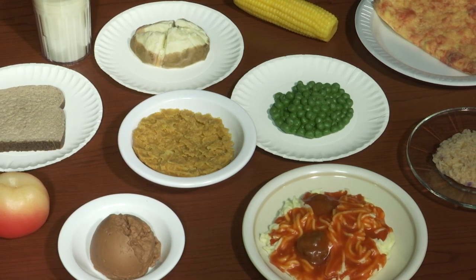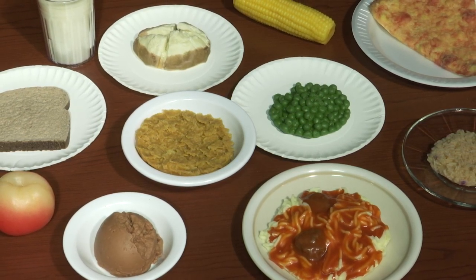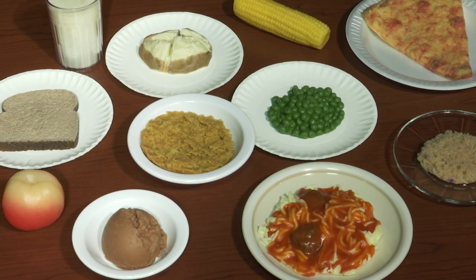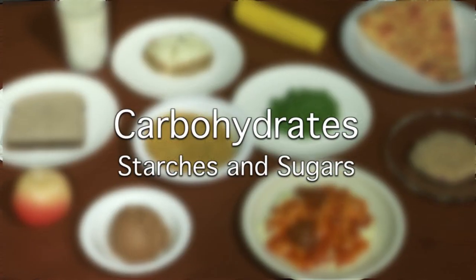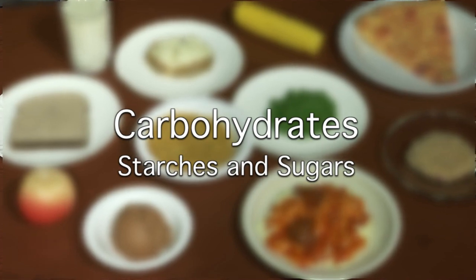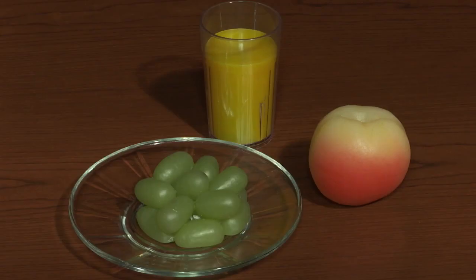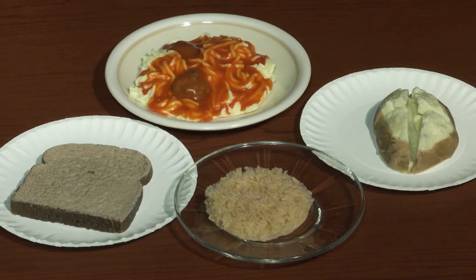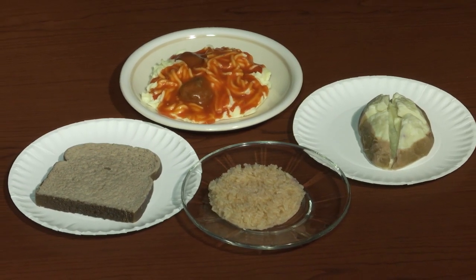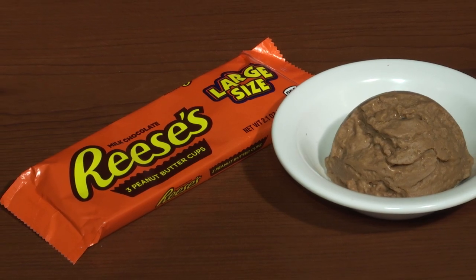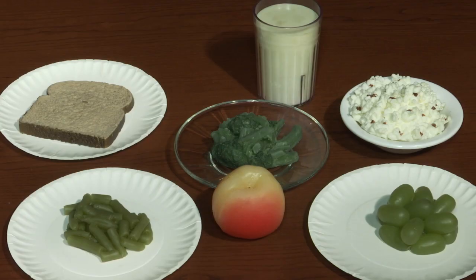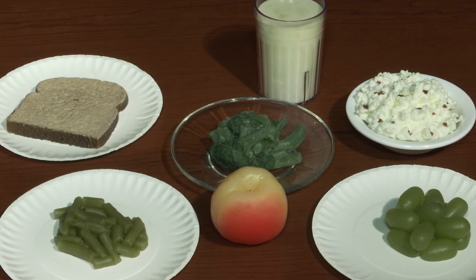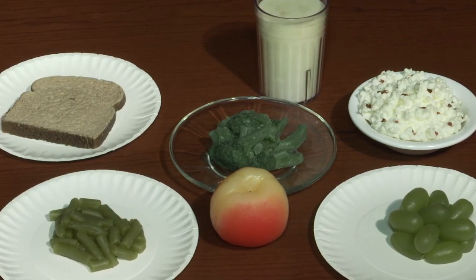Food is made up of carbohydrates, proteins, and fats, but carbohydrates have the largest impact on blood sugar levels. Carbohydrates are starches and sugars. Some examples are fruit, yogurt, milk, bread, pasta, rice, potatoes, ice cream, and other sweets. Many carbohydrate foods are healthy and the insulin you take will allow you to eat these foods and maintain blood sugar control.